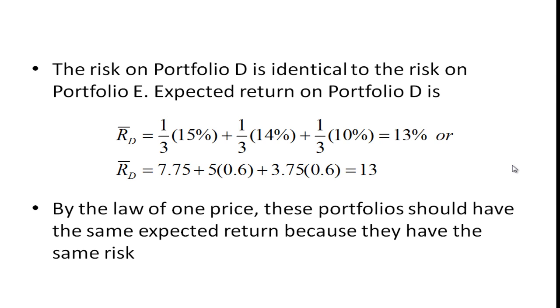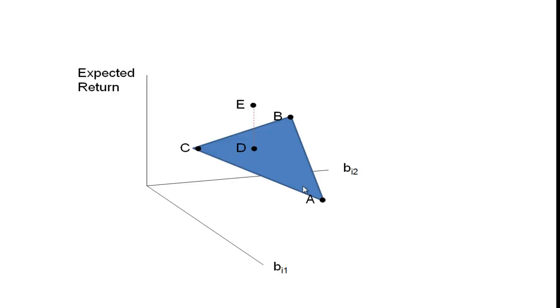Here I tried to draw a little picture so you get a visual of this. It's not really drawn correctly—I don't have these moving in the right amount down B1 and B2—but you have a plane here for A, B, and C; these are priced correctly. You have this portfolio E that lies above the plane, and we found that we could create a portfolio D that had the same level of risk that was on the plane. So what's going to happen here? This can't exist.